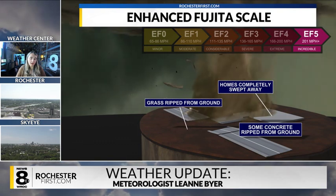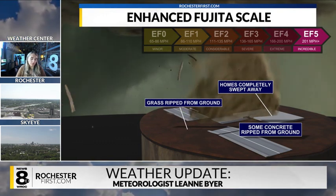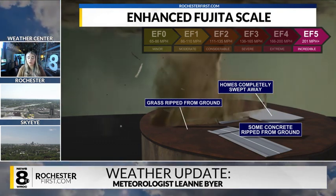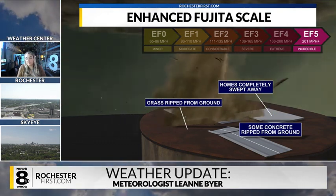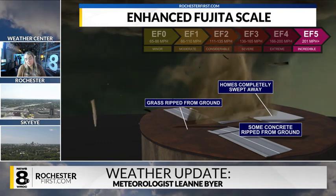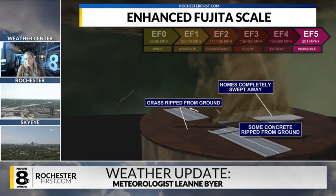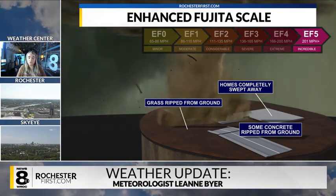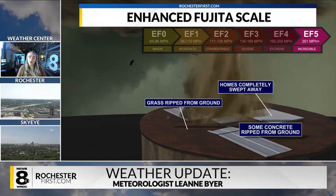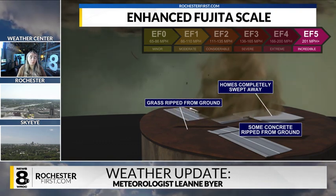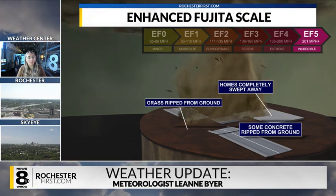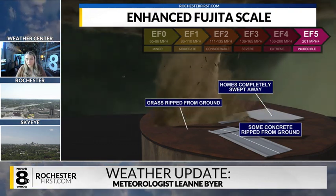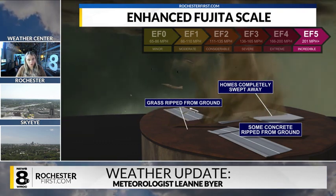With EF5 tornadoes, homes are swept away, grass is ripped up from the ground, and even parts of concrete can be ripped up from the ground. The wind speeds associated with EF5 tornadoes usually exceed 200 miles an hour or more, which is absolutely insane.